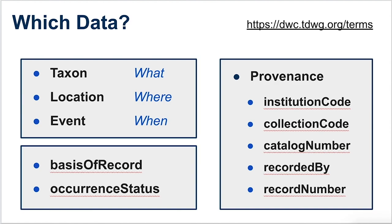The Taxon class has things like scientific names and the authority for those names and where they're published. The Location class contains things like descriptive locality, decimal latitude and longitude, and other such things. The Event class is occupied mostly with the date and time and under what protocols the information was gathered. So those are Darwin Core classes: Taxon, Location, and Event.